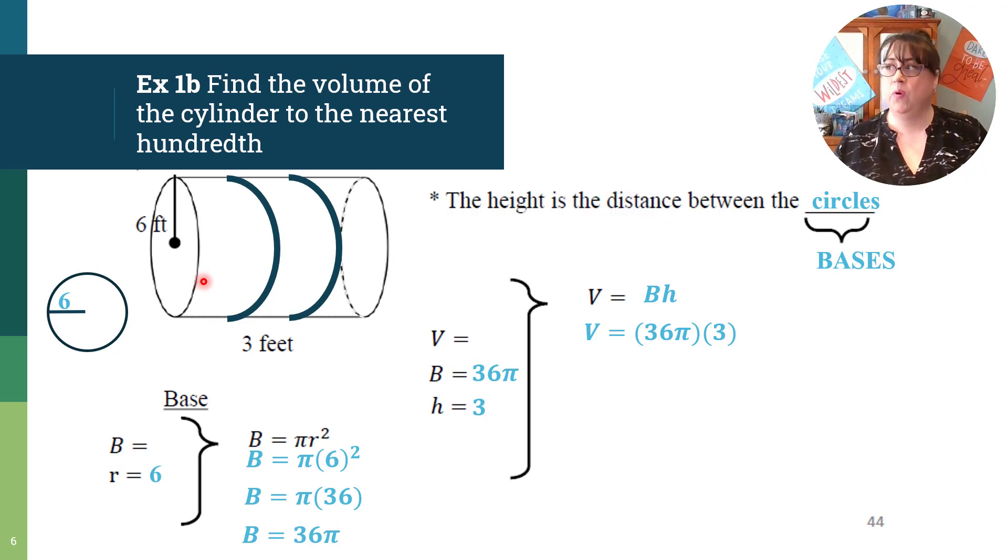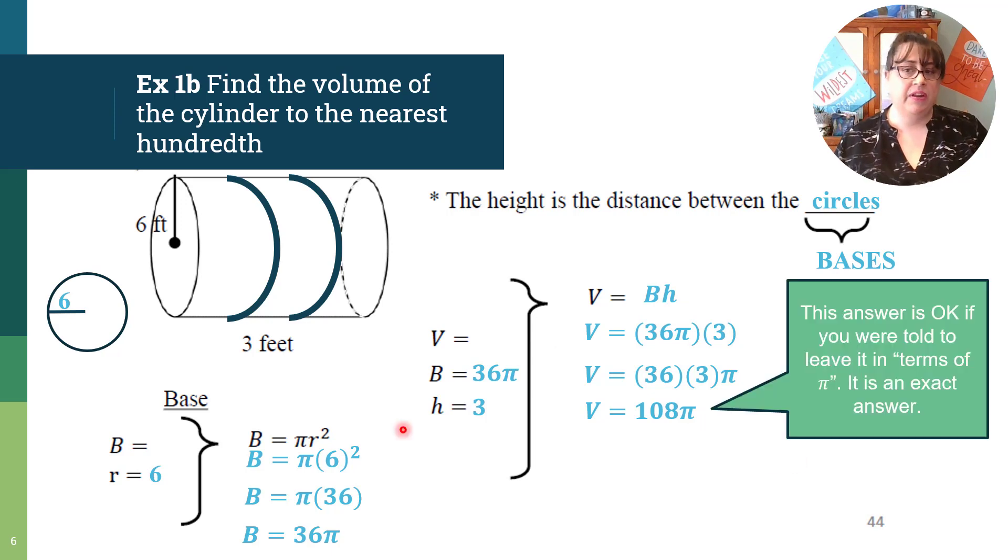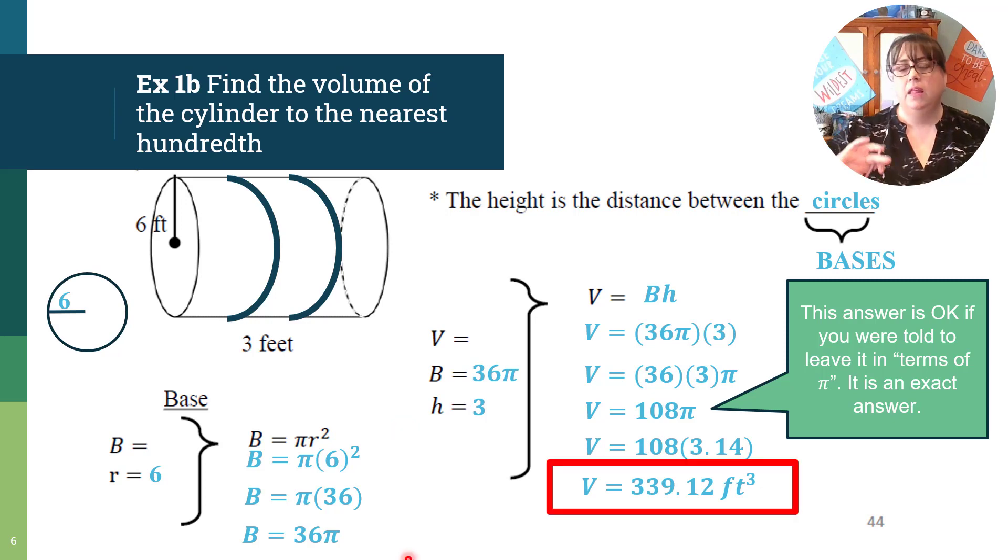So now we're going to take 36 times three, that's 108, and the π is just trailing along for right now. If you were told to leave it in terms of π, which sometimes you are, that's an exact answer and you would stop there. But we weren't, so we need to multiply by 3.14, and we get 339.12 feet cubed. These problems are kind of long and tedious. The only way that you get better at them is just to do lots and lots of them.